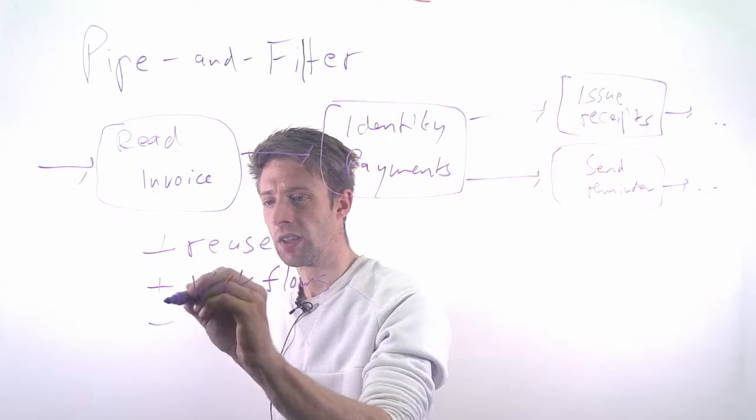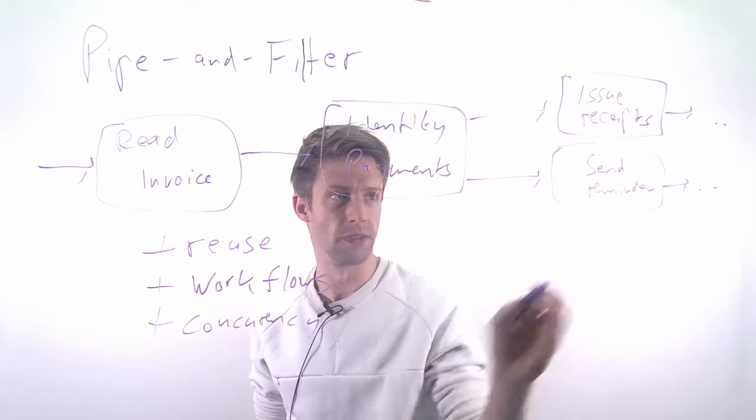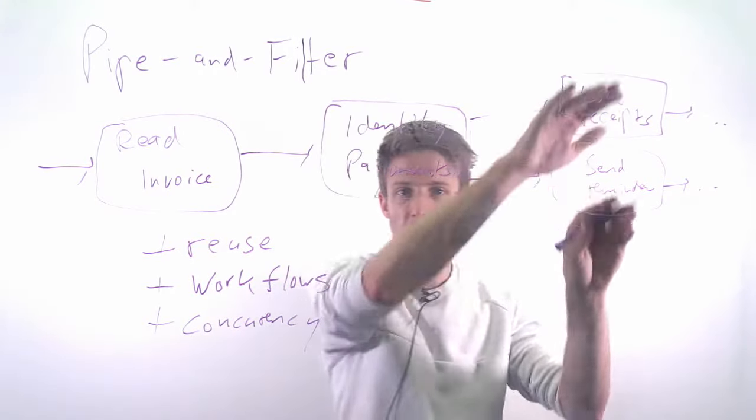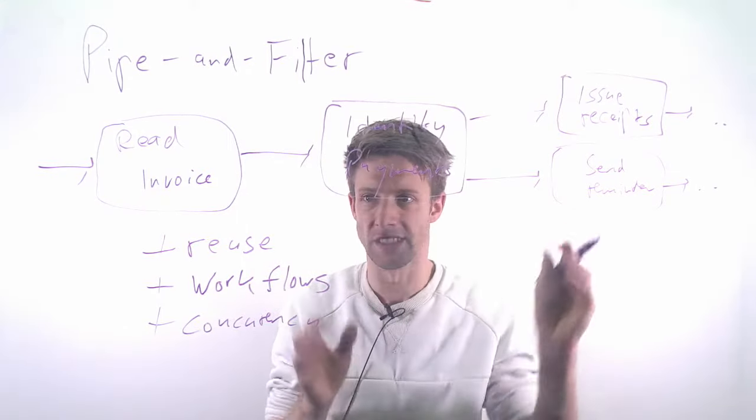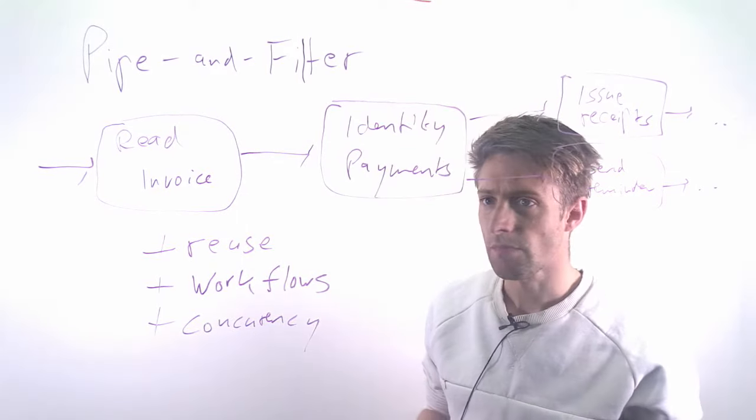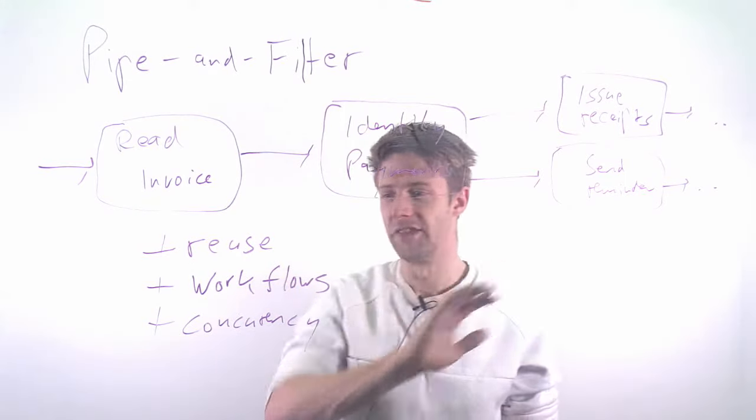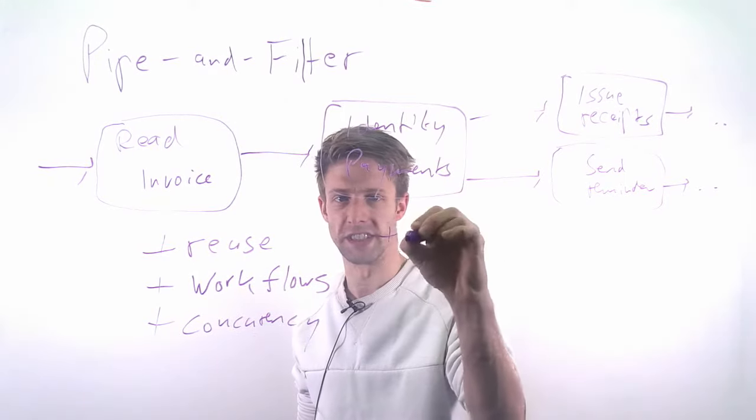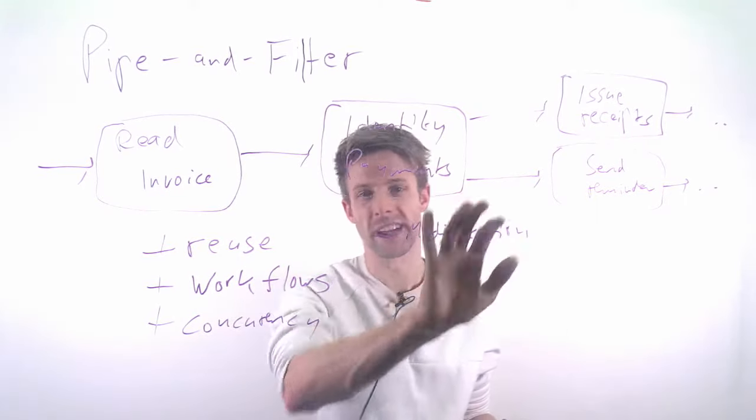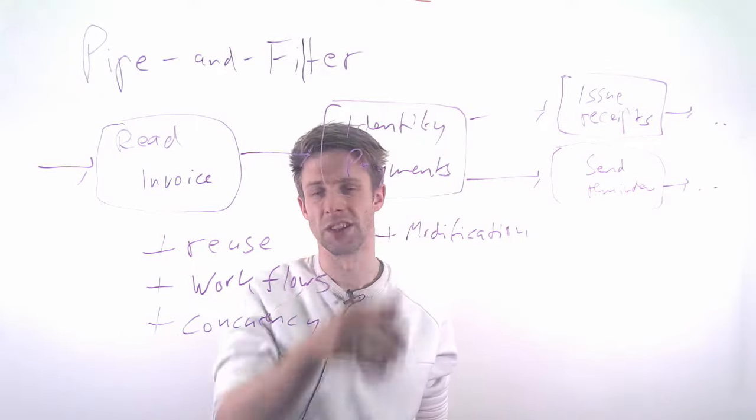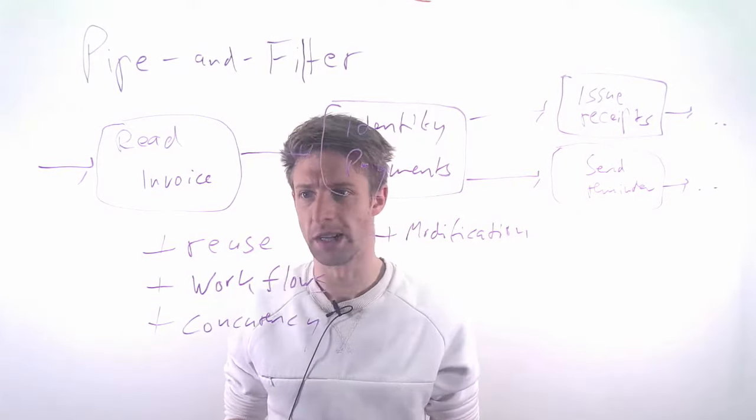We have the advantage of concurrency, so we can do these concurrent operations—we just have different filters that run at the same time, different pipes essentially. And we can again modify individual steps, so we could do modification here without changing the entire system because the input and the output should remain the same. We can just replace or modify single filters, single transformations.